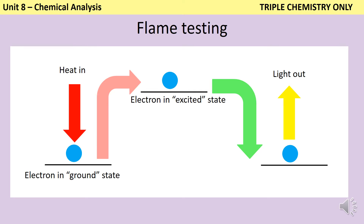The reasons that we see these colours are a little bit beyond the GCSE specification, but it's pretty interesting stuff. As you learned at the start of GCSE chemistry, electrons exist in certain energy levels or shells. When we draw atoms, we assume that the electrons are as close to the nucleus as possible, because this is the position in which they are most stable, and we call this their ground state.